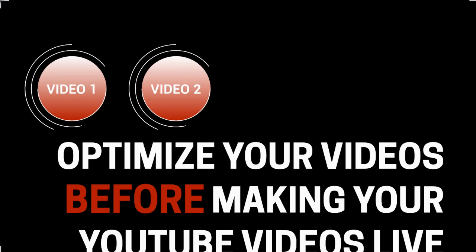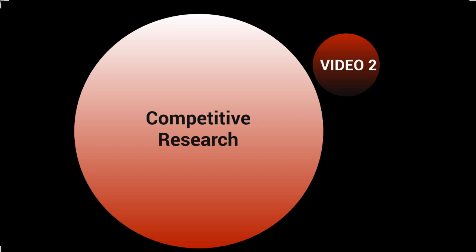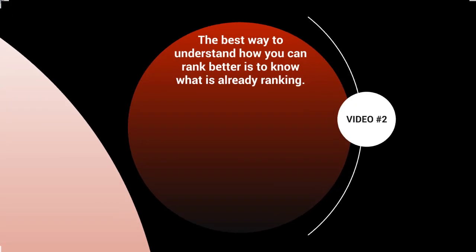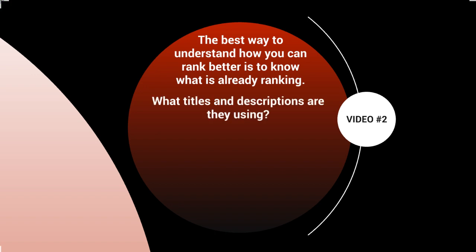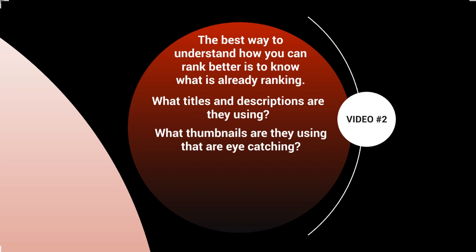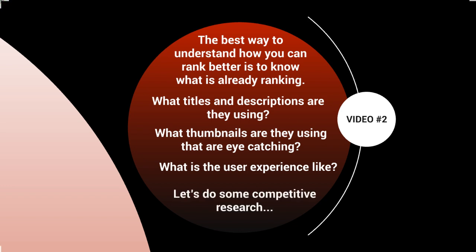Hello and welcome back, this is video number two. So let's talk about competitive research. The best way to understand how you can rank better is to know what is already ranking in your niche or your market. What we want to do is analyze the top videos and specifically look at what titles, descriptions, and thumbnails they're using, and what the user experience is like when you click through. So let's go ahead and do some competitive research.